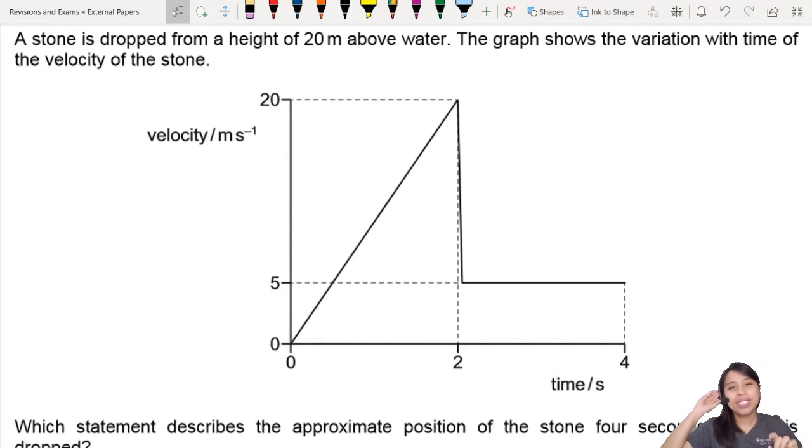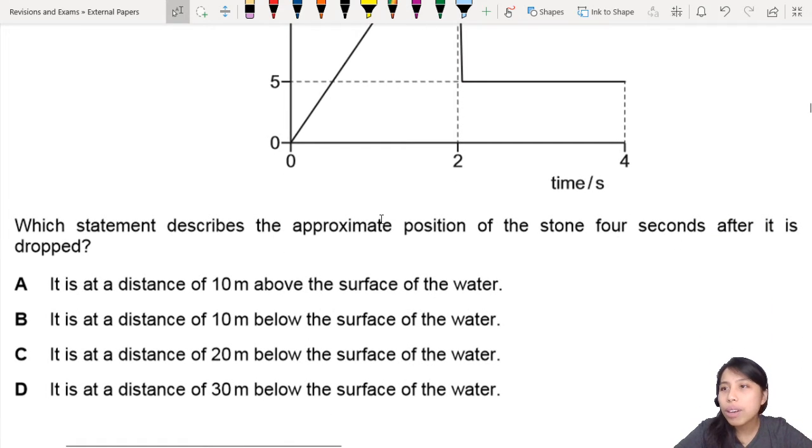This is quite a fun question. You'll see why. A stone is dropped from a height pretty high up and they show you a graph. Which statement describes the approximate position of the stone four seconds after it is dropped?